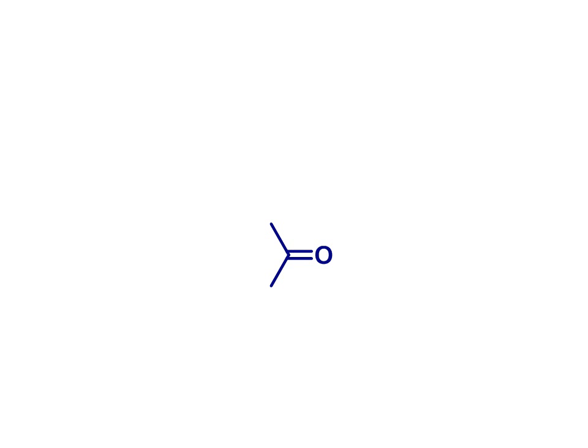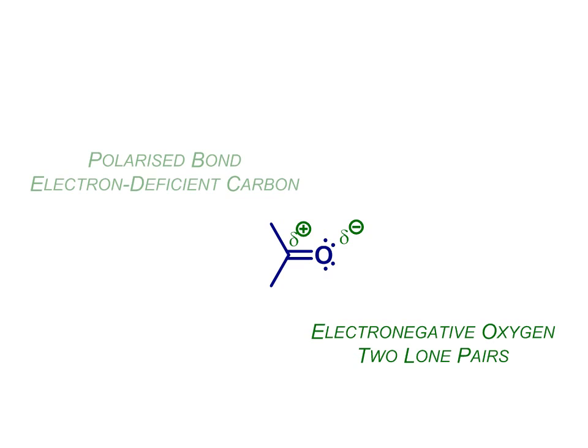Note from the start that the carbon and the oxygen are not equal partners in this bond. Oxygen is more electronegative than carbon, and it also carries those two lone pairs. As a result, the carbon-oxygen double bond is polarized, with a partial negative charge on the oxygen and a partial positive charge at the carbon. This polarization is key to how the carbonyl group will react.